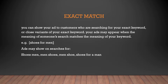Moving on, we have exact match. This is the final level where you are super targeted in terms of what you want your users to search. You add your keyword in square brackets, showing your ad to customers who are searching for your exact keyword or a close variant. For example, for the keyword 'shoes for men,' your ad will be shown on searches like 'shoes men,' 'men shoes,' 'men shoe,' or 'shoes for a man.'